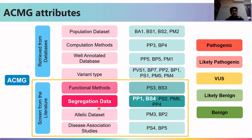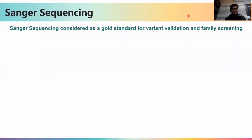Next is the segregation dataset. Segregation data is used to determine whether a variant segregates within a family and causes disease. The relevant ACMG attributes include PP1, BS4, PS2, PM6, and PP4. For this section, we focus on PP1 and BS4. Before going into detail, it is important to understand Sanger sequencing, which is considered the gold standard for variant validation and family screening.